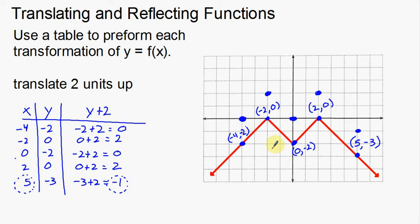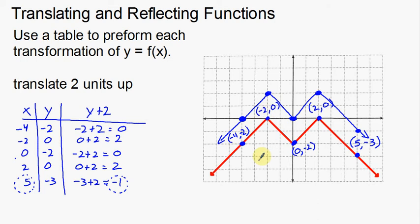Now I can basically connect the dots. I go here for one arm, down here — there's a peak, there's a valley, there's my last peak — and connect down to the second arm on the right. There is my new function, translated two units up. To summarize: find some key points, then add 2 to each y coordinate if translating up, or adjust x coordinates for left/right. Then redraw the graph. This is my function translated two units up.